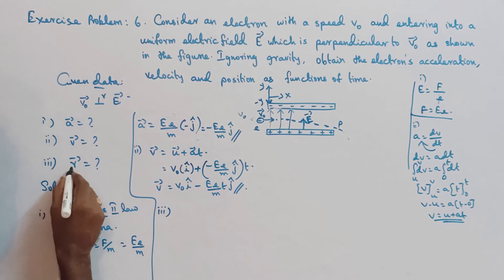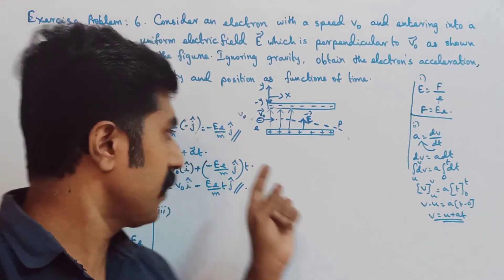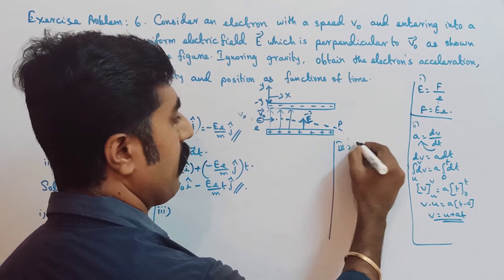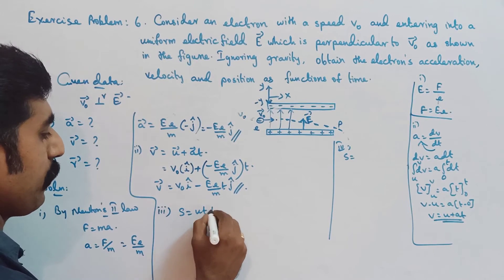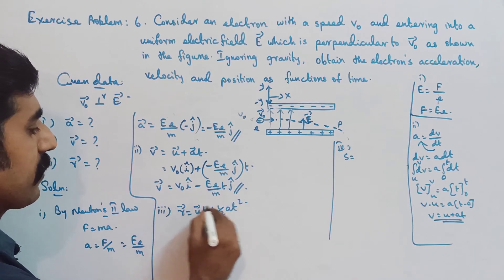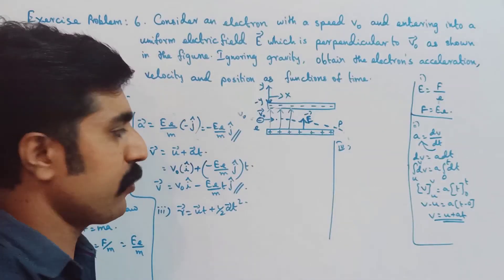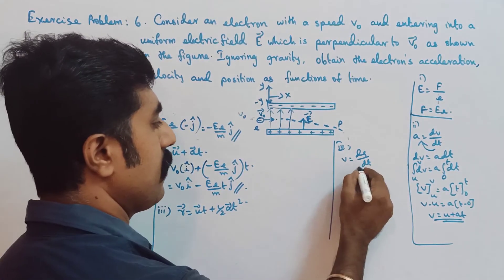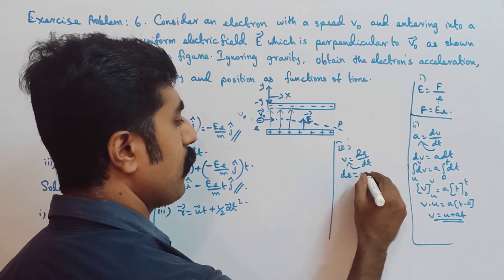The third part is position. Position is the R vector. We use the second equation of motion: S = ut + ½at². Position S equals R vector. We derive it from: velocity equals rate of change of displacement, so ds = v·dt. Substituting v = u + at, we get ds = (u + at)dt.